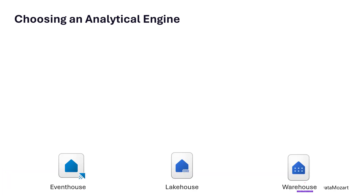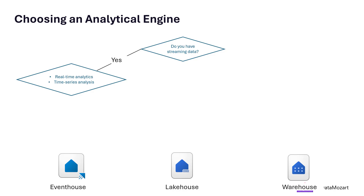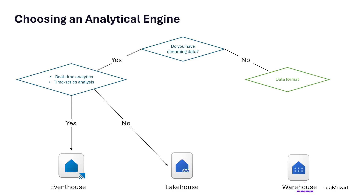Let's wrap up this part with a high-level decision tree for the analytical storage engine. Please keep in mind that it shows a simplified overview based on the common scenarios we previously examined, and it's by no means definitive guidance. I would also like to emphasize that combining multiple engines should be an option when you need to incorporate diverse analytical workloads across the data platform. So, the first question you should ask yourself: do I have streaming data? If yes, and you're dealing with real-time analytics or time-series analysis, you should use an event house. If not that type of streaming data, you are good to go with the lake house.